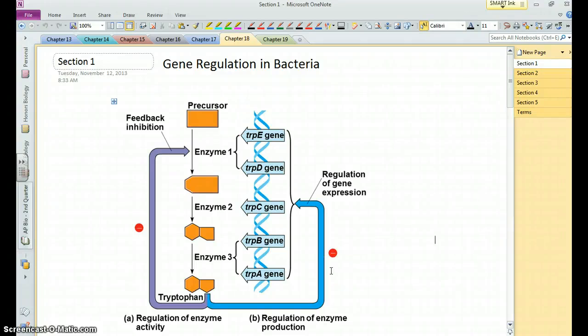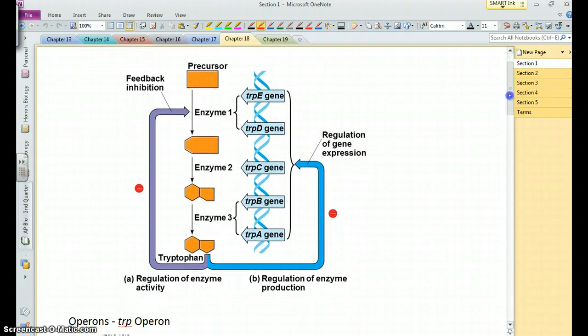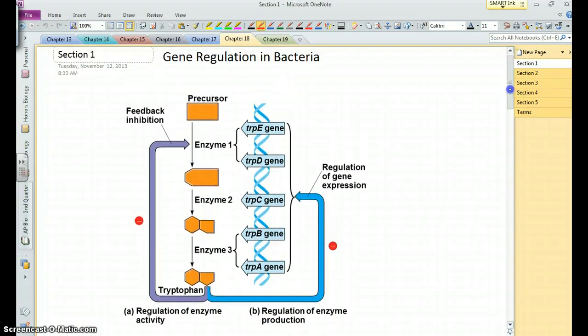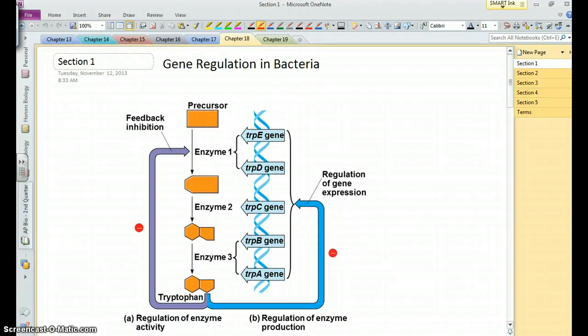Chapter 18, regulation of genes in both prokaryotes and eukaryotes. Of course, organisms, cells, and the organisms in the cells they contain want to regulate what's going on inside them. As we've talked about, just about all cells have the full complement of DNA, but each cell only uses a relatively small proportion of that DNA because a lot of it doesn't apply to that cell.